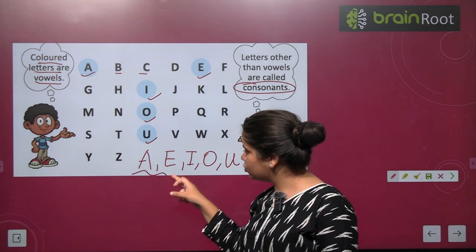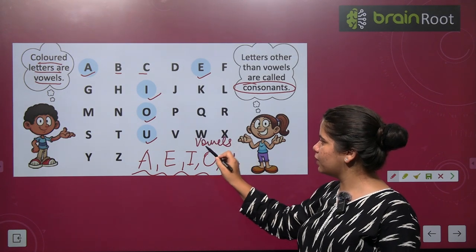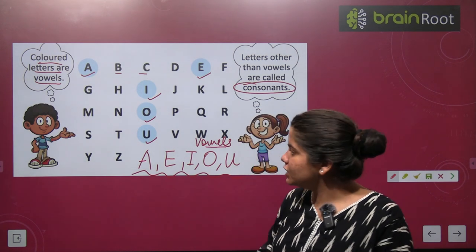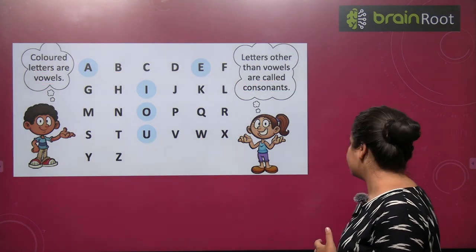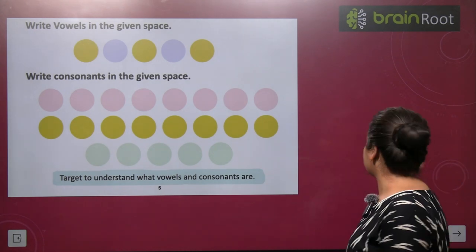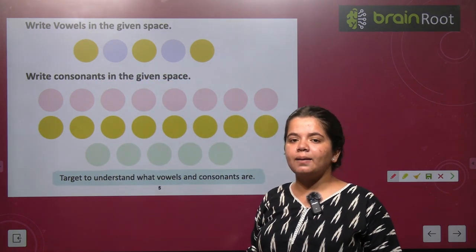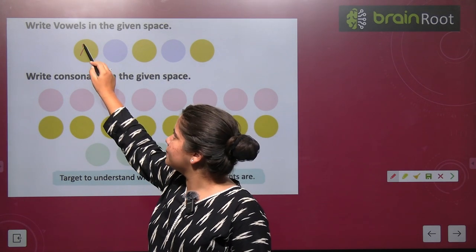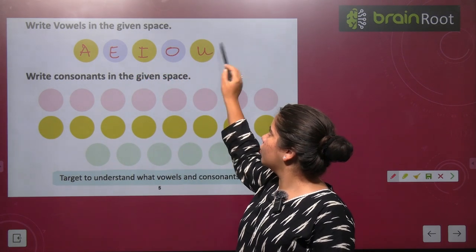So you must remember that there are 5 vowels. Which vowels are they? A, E, I, O, U — these are vowels. Next, we have to write the vowels in the given space. You are given some vowels and you have to write E, I, O, U in the spaces provided.